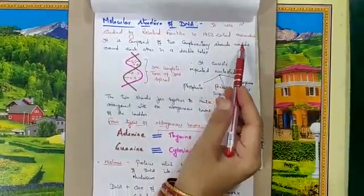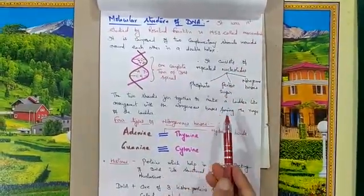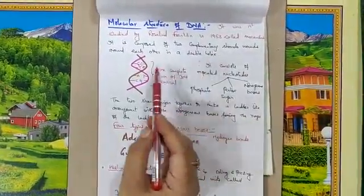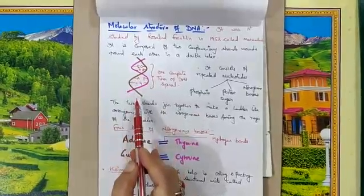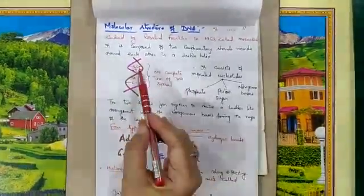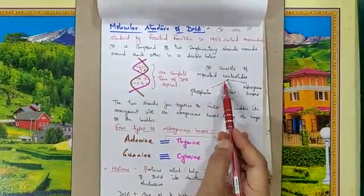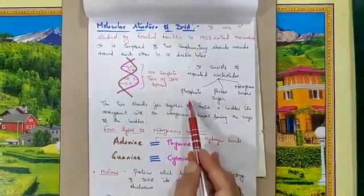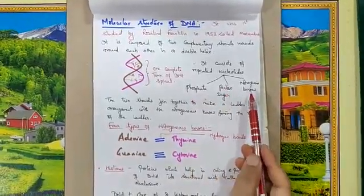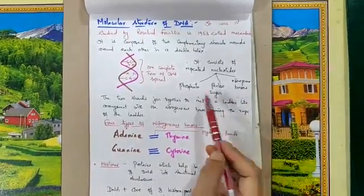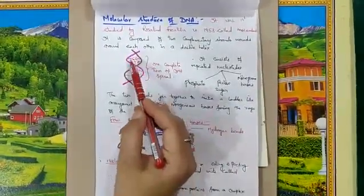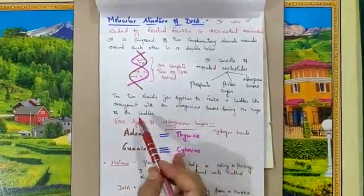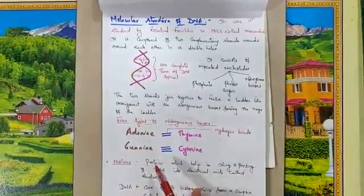Now let us study about the molecular structure of DNA. It was first studied by scientist Rosalind Franklin in 1953, and it is called a macromolecule because it is composed of two complementary strands in a double helical structure. This helical structure consists of repeated nucleotides, and these nucleotides contain three components: a phosphate group, a pentose sugar, and four nitrogenous bases. The two strands join together to make a ladder-like arrangement forming the rungs of the ladder.